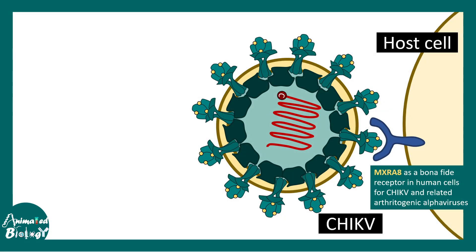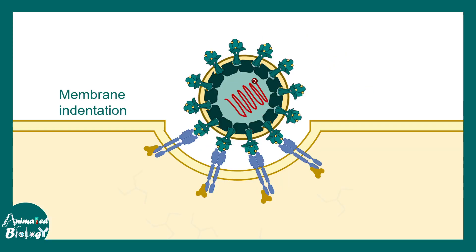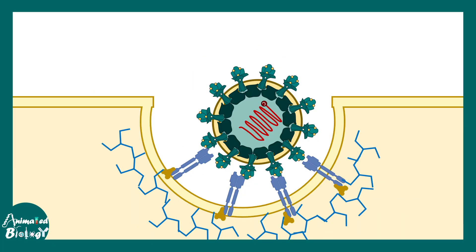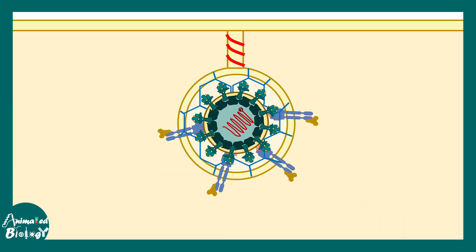Here is a host cell on which there could be several receptors. One of the receptors used by the Chikungunya virus is basically the MXRA8 receptor, which is present in many muscle cells, epithelial cells, and even fibroblasts. Once this virus interacts with the receptor it leads to receptor-mediated endocytosis and via a clathrin-mediated process it gets in.